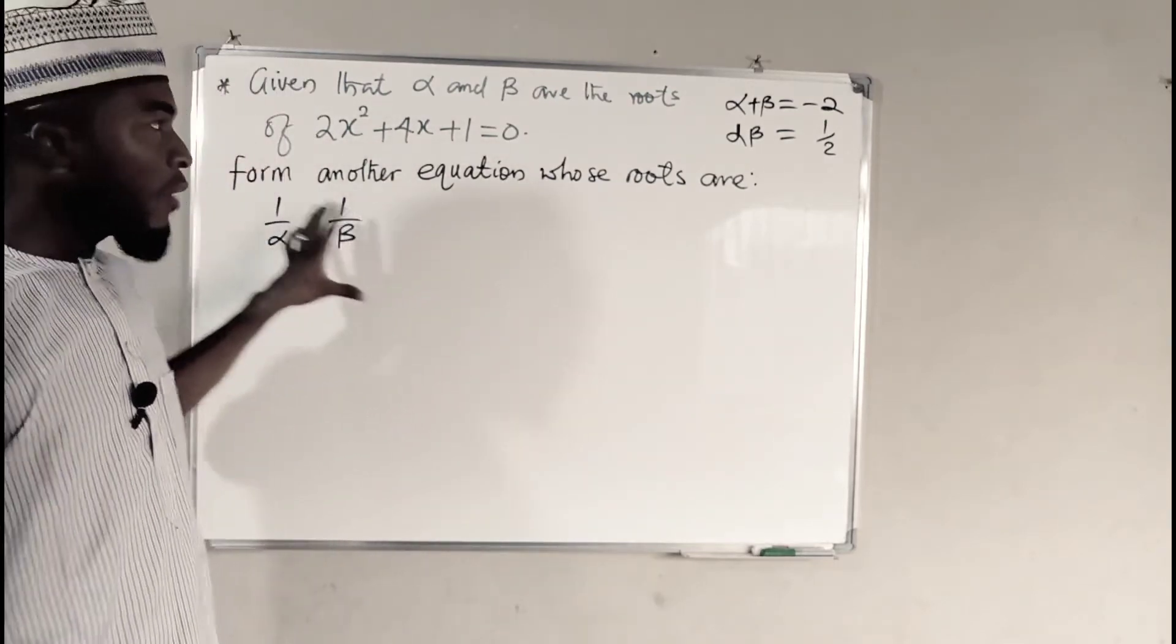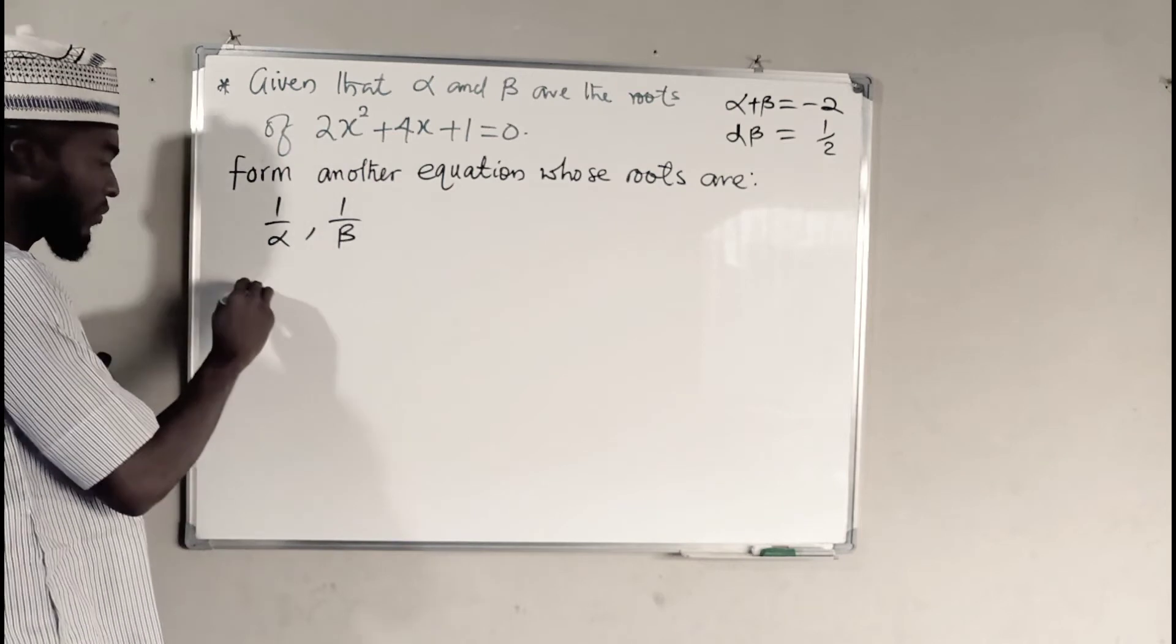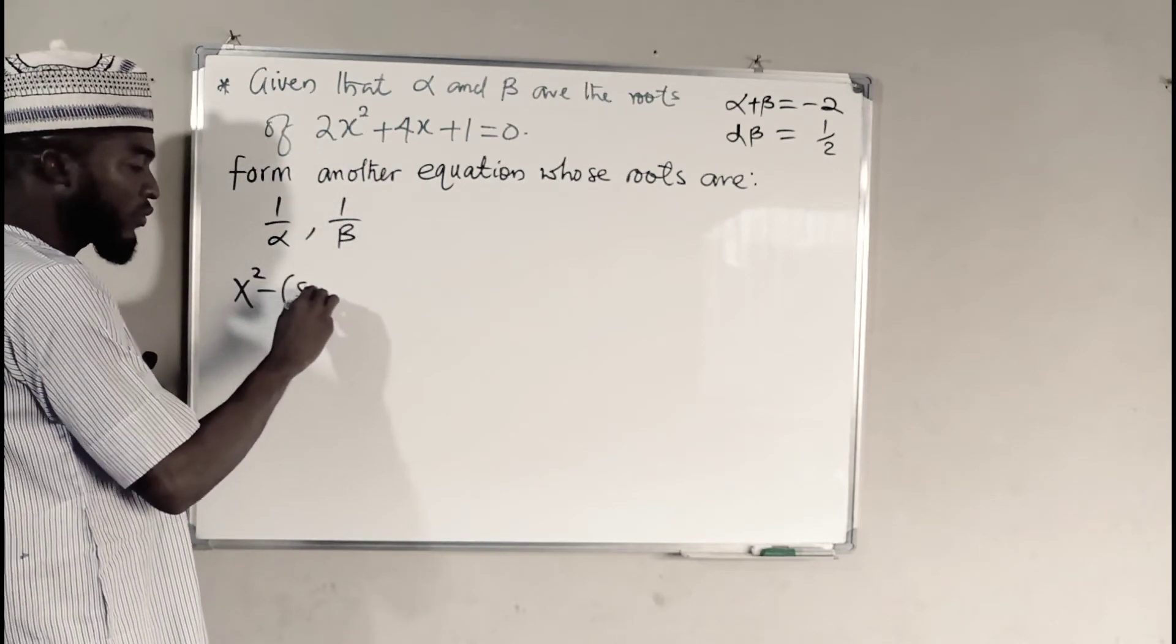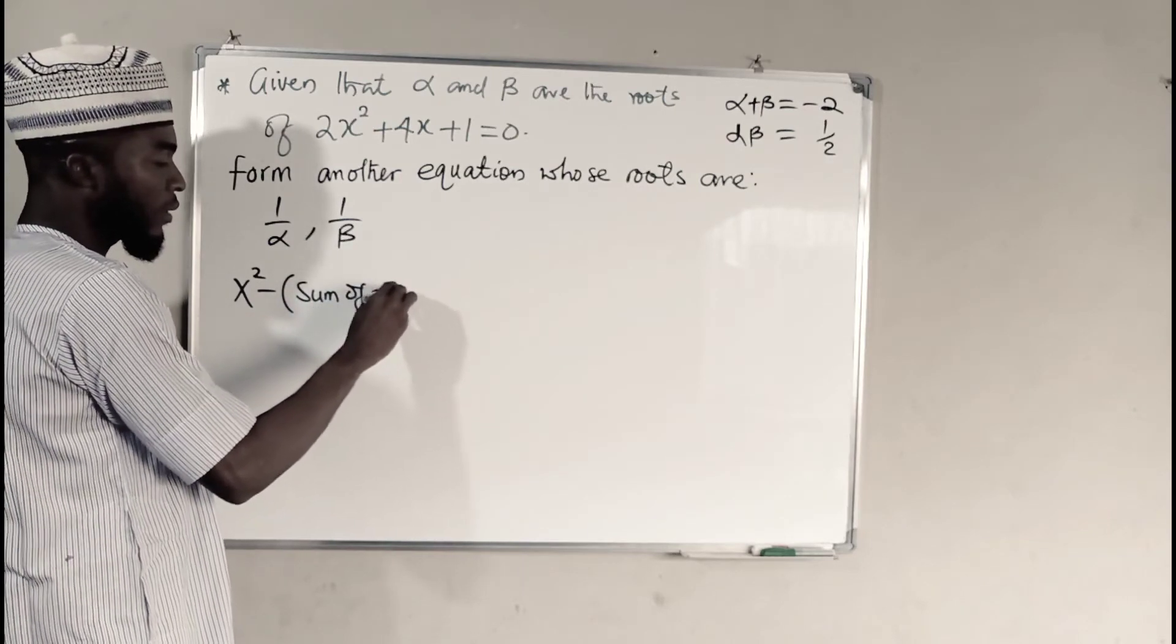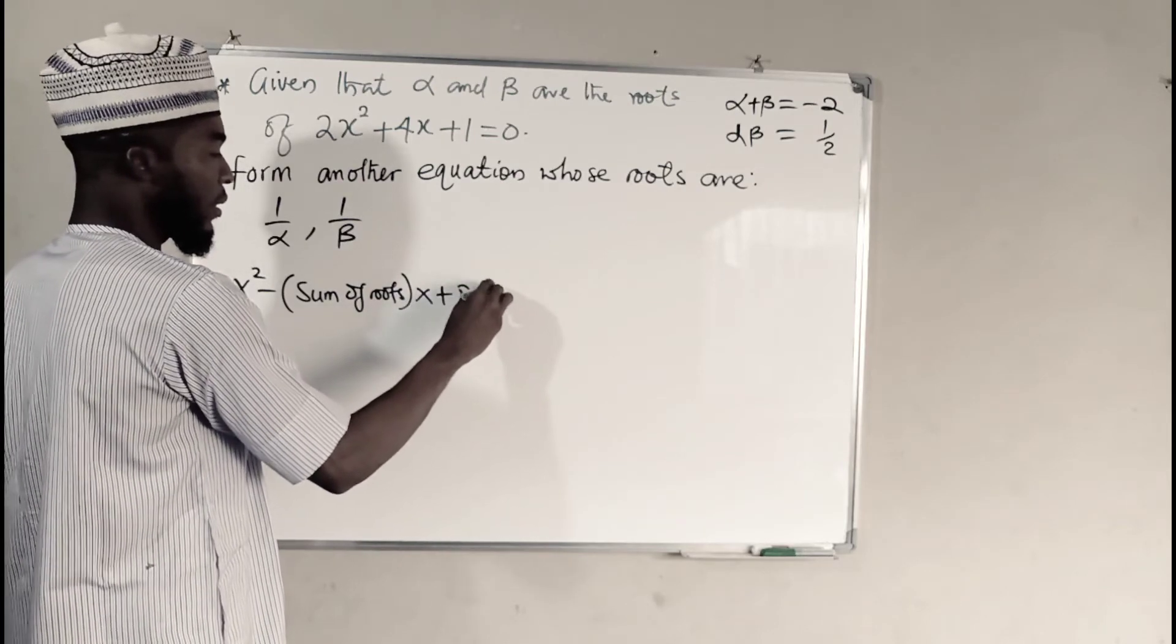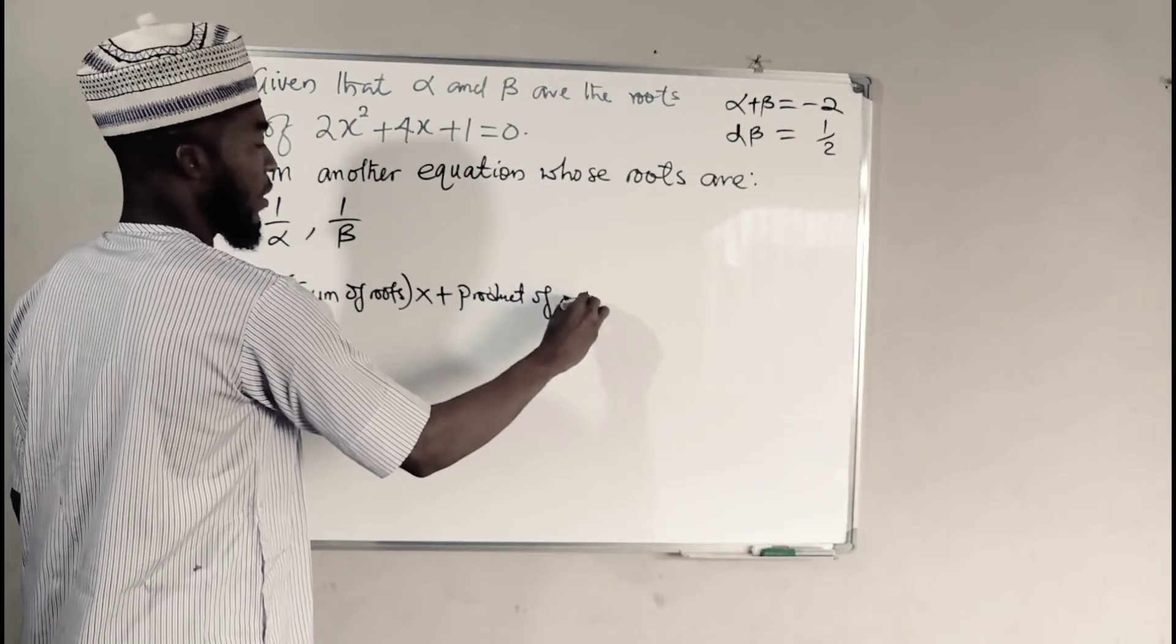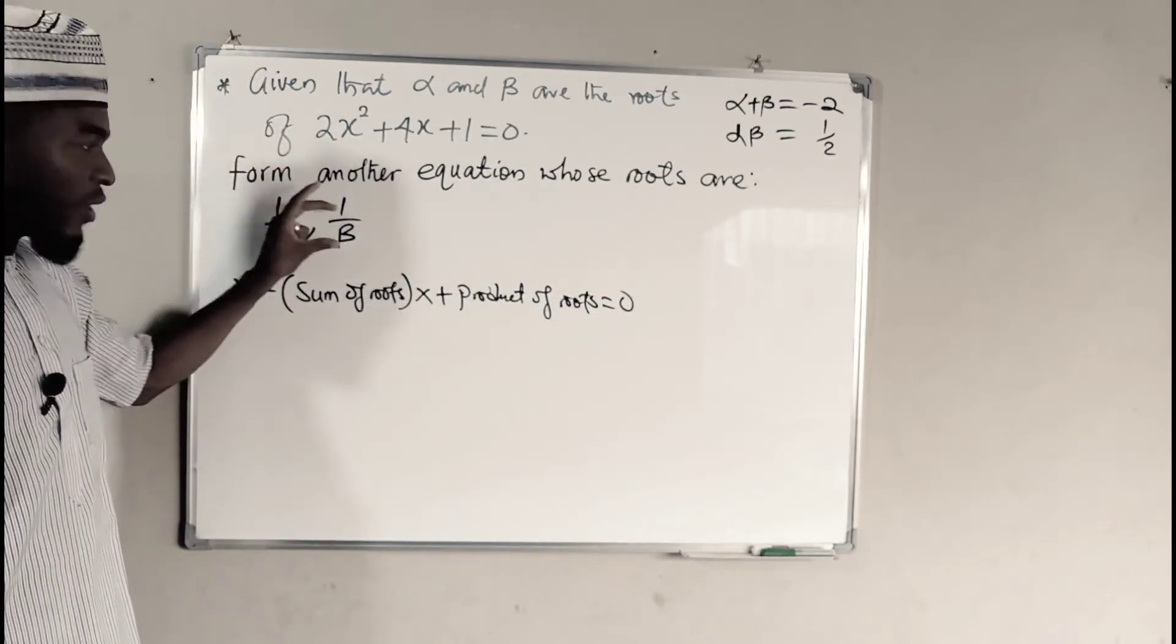So now to form another quadratic equation whose roots are this, we need this formula. x squared minus sum of roots times x, then plus the product of roots equals 0. But the roots, we are referring to these two other roots.